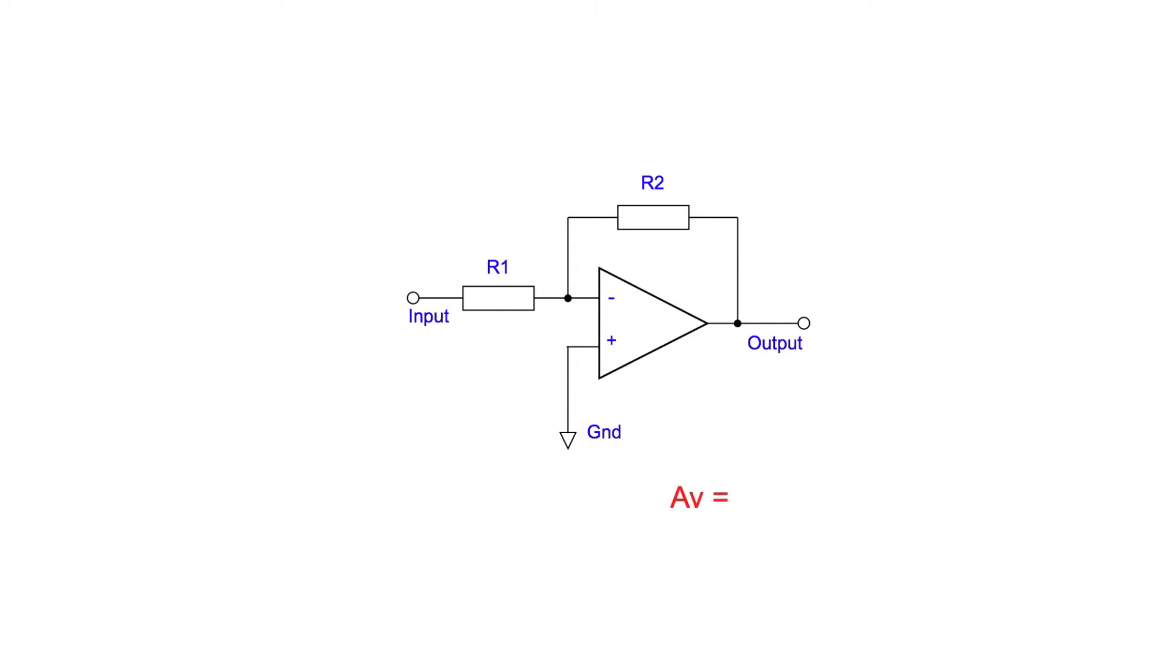It's very easy to calculate the voltage gain. It's simply R2 divided by R1. There's also a minus sign in there because it is an inverting amplifier. So let's take an example of designing an amplifier with a gain of 10. We could choose R1 to be 1k and this would then mean that R2 is 10k, 10 times R1 to give us the gain of 10. And here we see the values added to the circuit diagram.